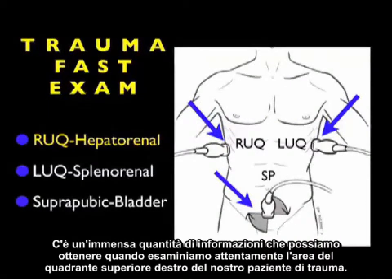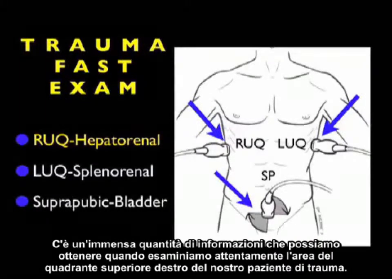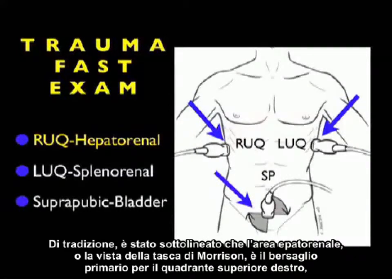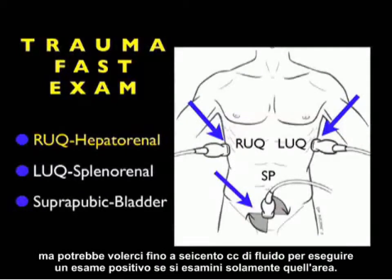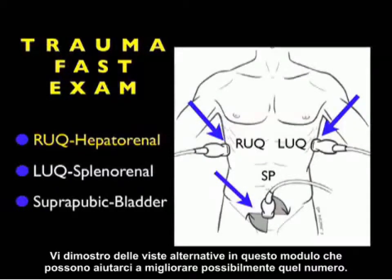There's a tremendous amount of information we can gain by looking closely into the right upper quadrant area in our trauma patient. Traditionally, it's been emphasized that the hepatorenal area, or Morrison's pouch view, is the primary target for the right upper quadrant, but it can take up to 600 cc's of fluid to make a positive exam if only looking into that area. So I'll show some alternative views in this module that can help us to possibly improve on that number.